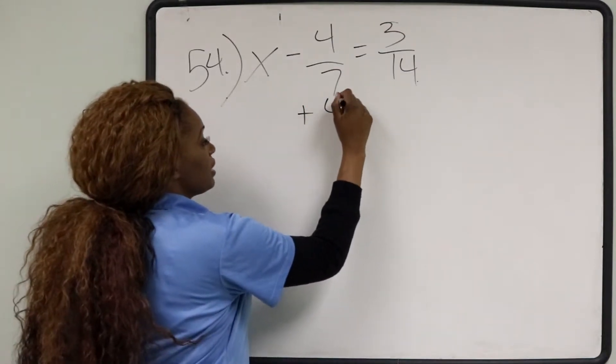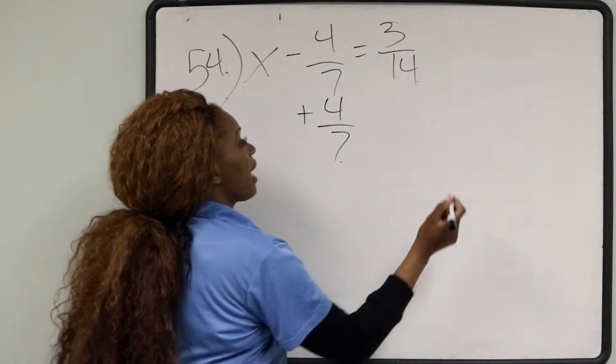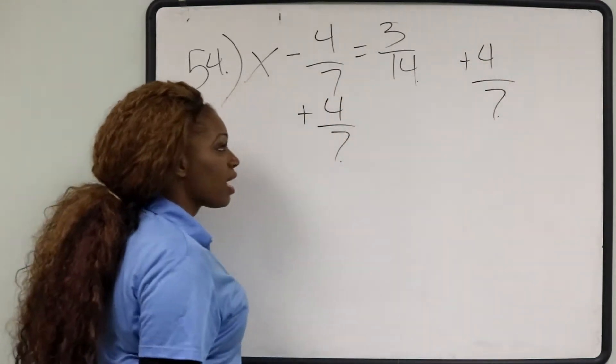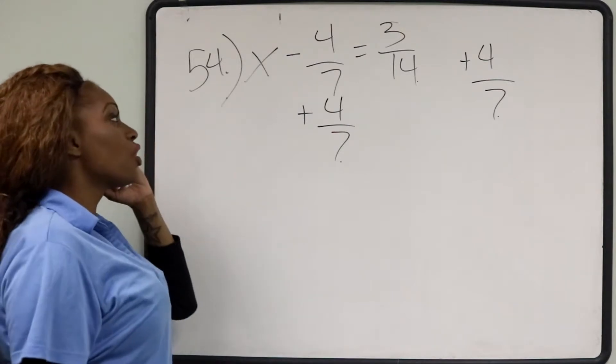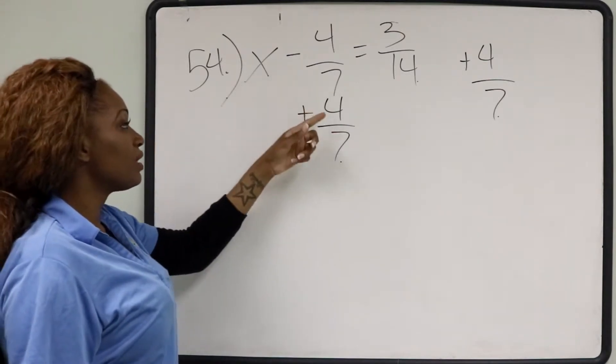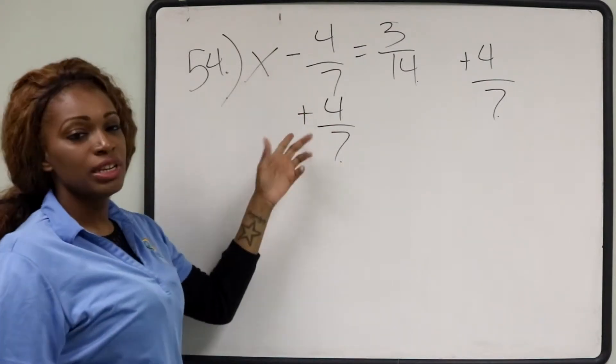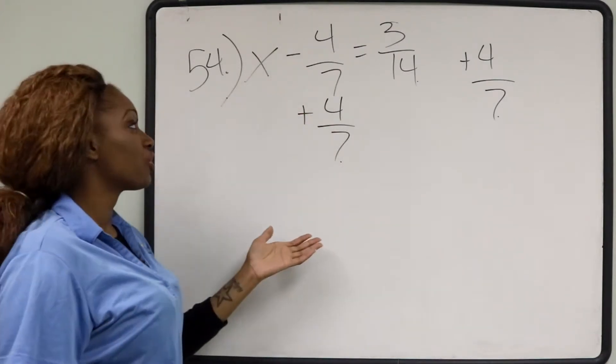So I'm going to add 4 7ths to this side and I'm going to add 4 7ths to the other side. So when you have a negative 4 7ths and two fractions that are equal in value, and one is positive and one is negative, they essentially cancel each other out.